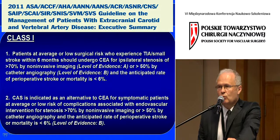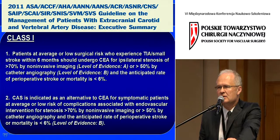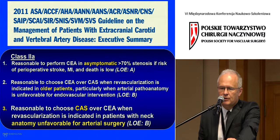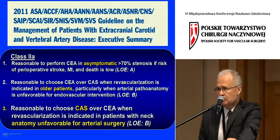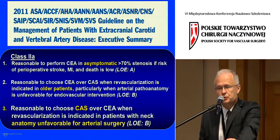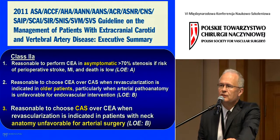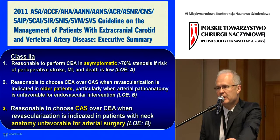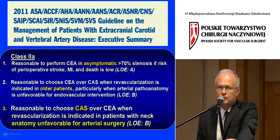Guidelines also state that carotid stenting is a reasonable alternative for symptomatic patients, but give it a Level of Evidence B. From the American experience, this is largely because Medicare and Medicaid will not reimburse endovascular treatment unless the patient is at high surgical risk. For asymptomatic patients, it is Class IIa — reasonable but not mandatory — for lesions greater than 70%, Level of Evidence A. The CREST trial also showed that elderly patients benefit more from surgery, while younger patients do better with endovascular treatment.